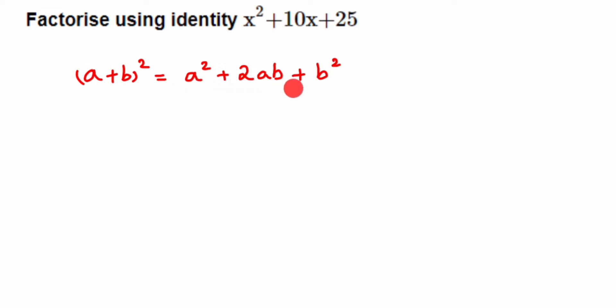In the question they have given a² + 2ab + b², and our problem is x² + 10x + 25. We have to write it as (a + b)². If we find what a and b are, then we can directly substitute into (a + b)² and get the answer.